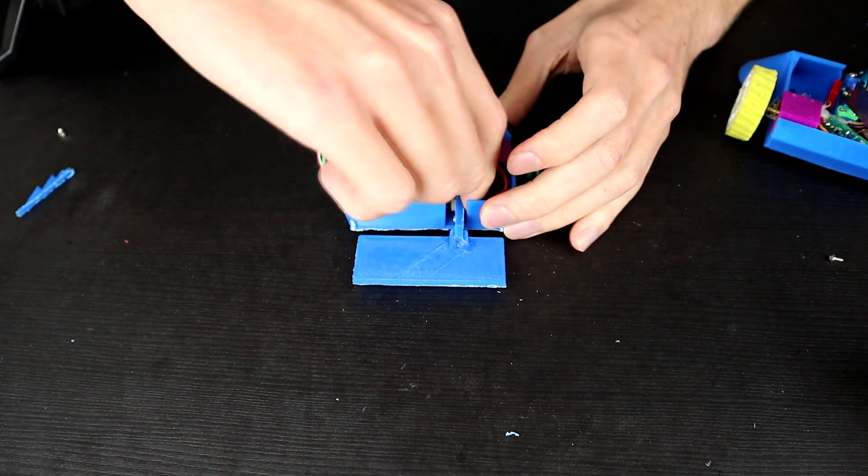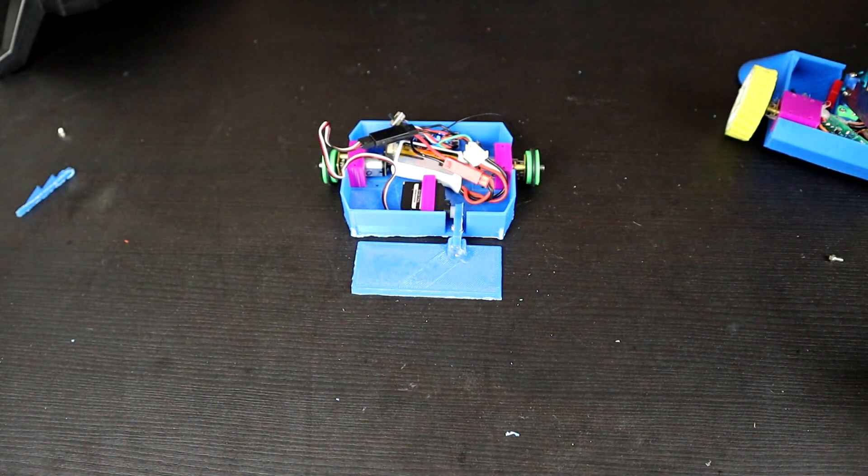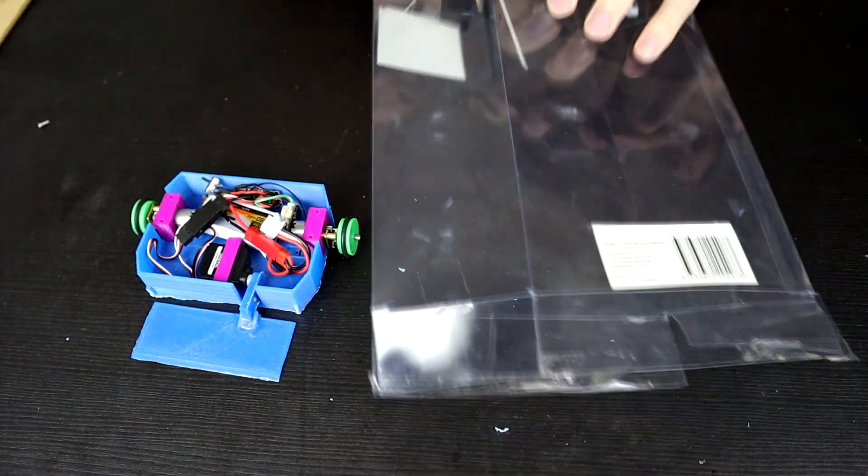Oh, I see. It's how the servo horn attaches into the 3D printed plastic horn. Hot glue is going to be the solution to that. Of course.